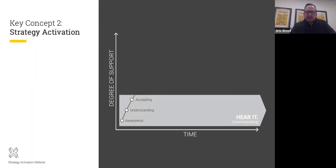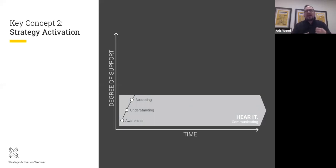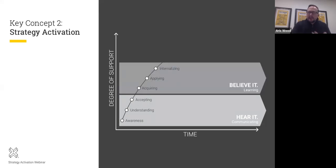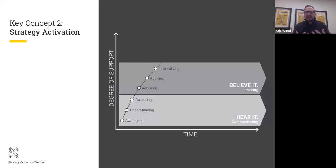The first phase of the activation curve we call 'Hear It' — the communication phase. This is where we need to get the organization to be aware of the change, understand what it is, why we're doing it, and reach a point of acceptance. That point of acceptance doesn't mean people are totally bought in — it means they accept the change is going to happen and are willing to go to the next step to learn more. The second phase is a learning phase we call 'Believe It.' People who reach the acceptance phase are willing to start acquiring new skills, applying them in their work, and based on feedback loops they begin to internalize the change — answering the question: is this better than it was yesterday?